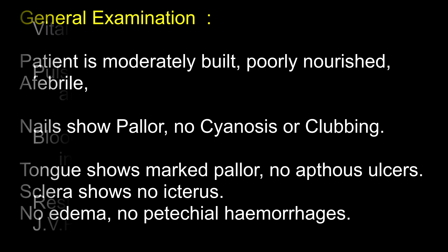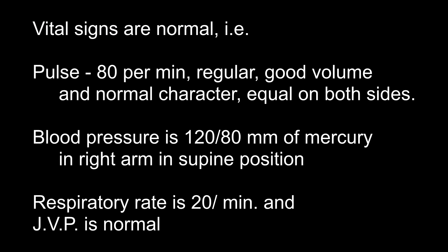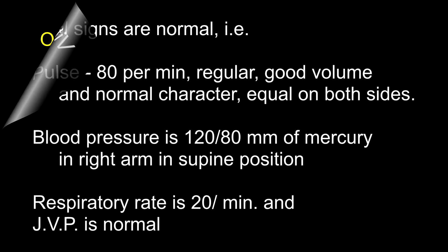The vital signs are normal. Pulse is 80 per minute, regular, good volume and normal character, equal on both sides. Blood pressure is 120/80 mmHg in the right arm in supine position. Respiratory rate is 20 per minute and jugular venous pressure is normal.